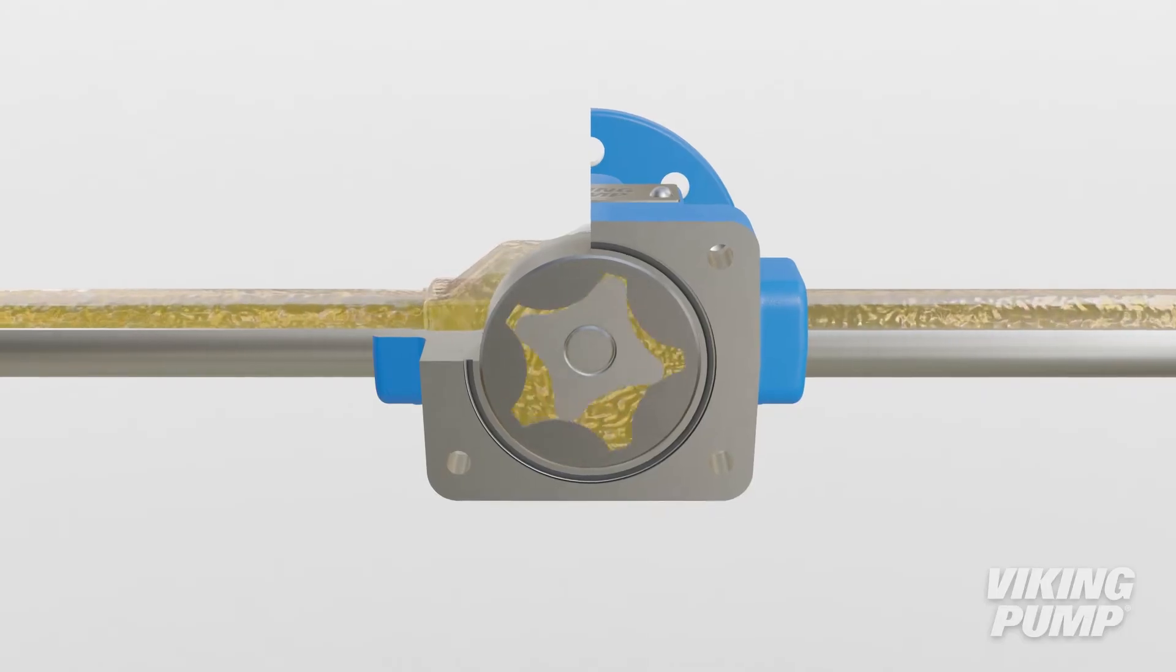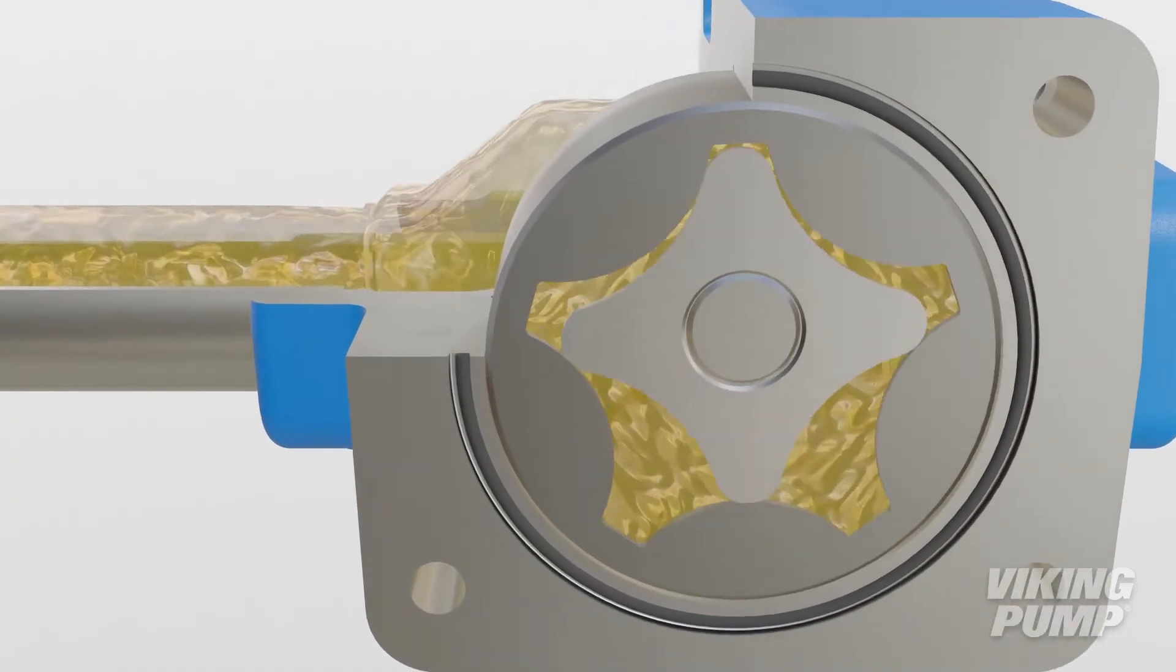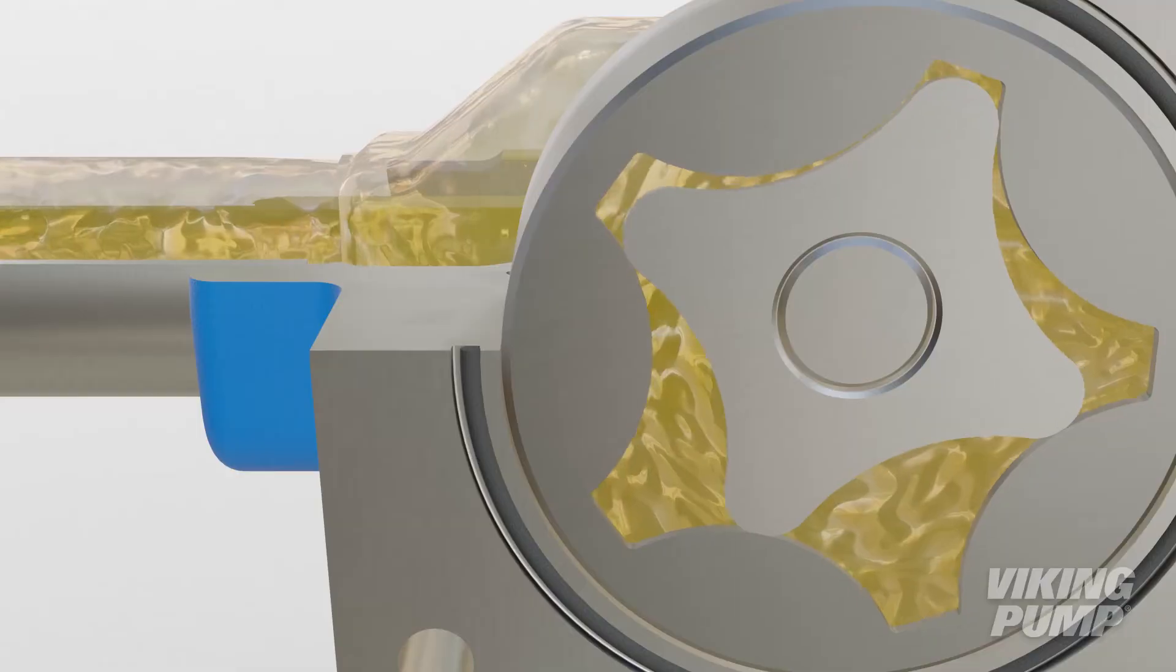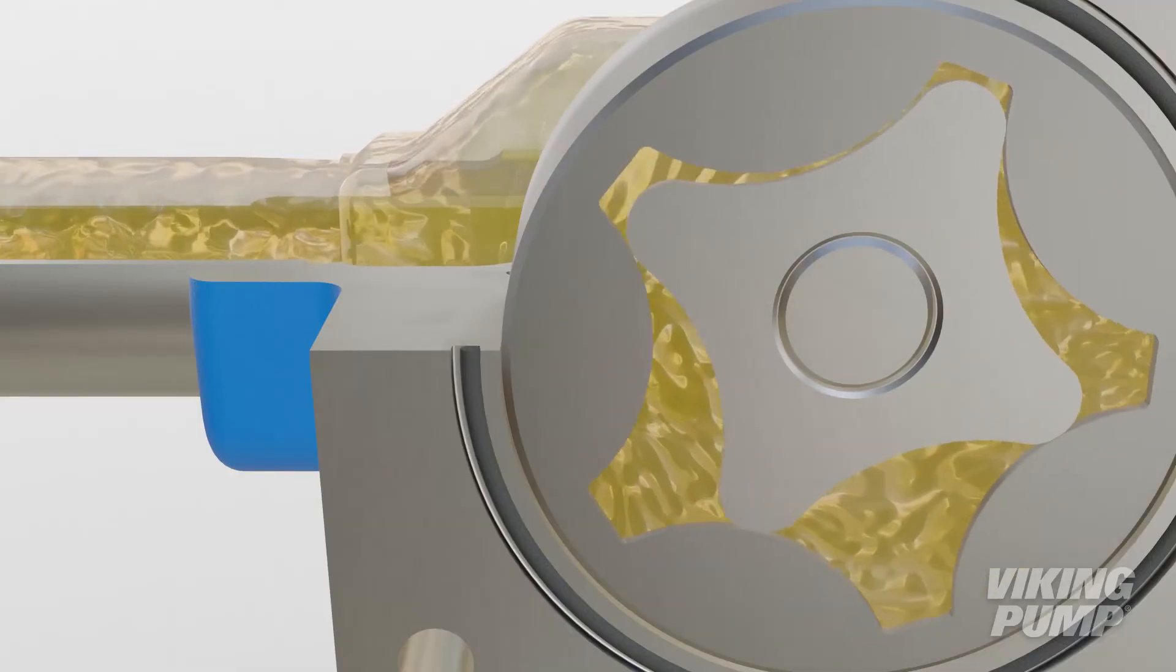As the pump rotates, these cavities expand on the inlet side and contract on the outlet side. As the teeth come out of mesh, a low pressure zone is created at the suction port, pulling liquid into the spaces.